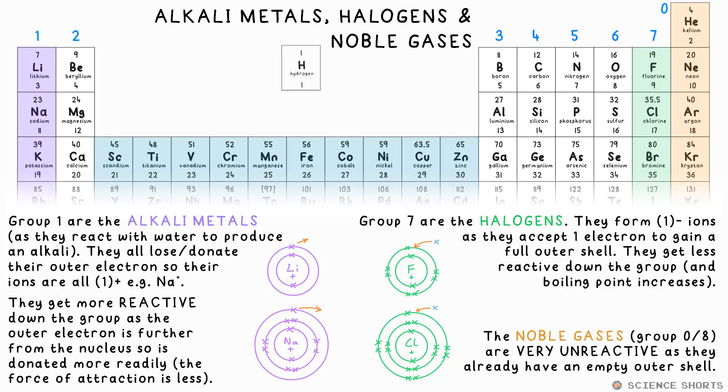Group 0, sometimes referred to as group 8, are called the noble gases. They already have an empty or full outer shell, depending on your perspective, so they don't react. Well, in reality, sometimes they can react under special conditions, so we just say they're very unreactive. We don't really say group 8 anymore though, because some people thought that helium might feel a little left out, as it only has two electrons in its outer shell.